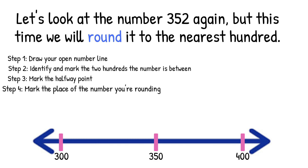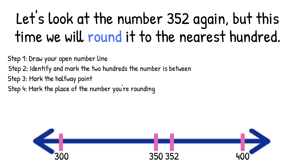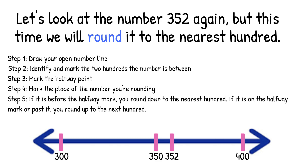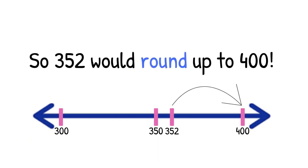Step 4: Mark the place of the number you're rounding. We are rounding 352. So we have to decide — is 352 going to go before 350 or after 350? Right, 352 comes after 350, so we're going to put it right here. Step 5: If it is before the halfway mark, you round down to the nearest 100. If it is on the halfway mark or past it, you round up to the next 100. So 352 would round up to 400.